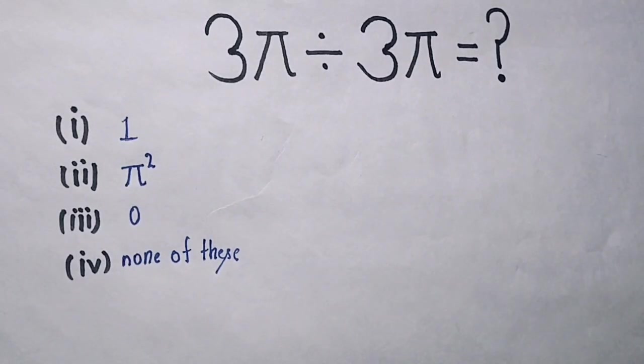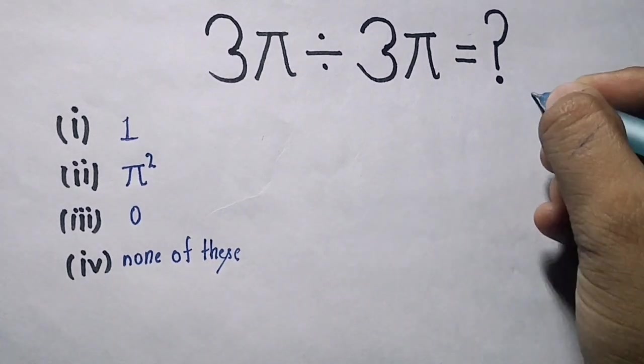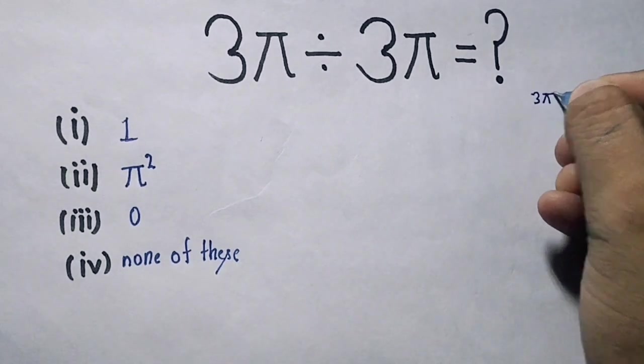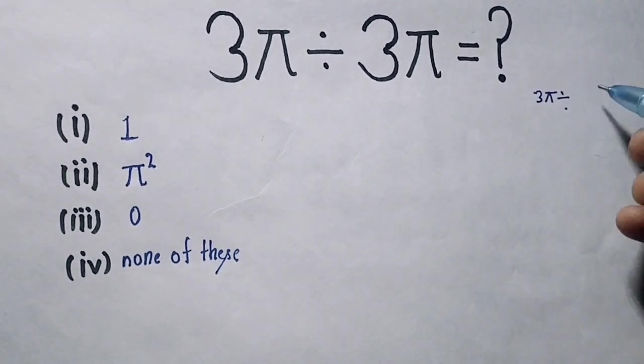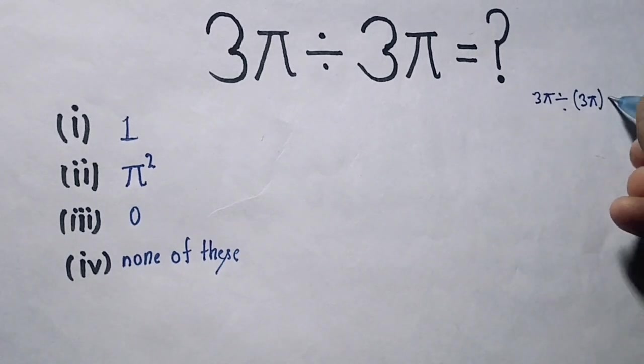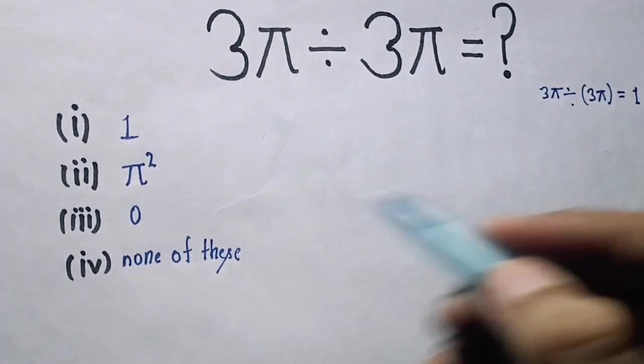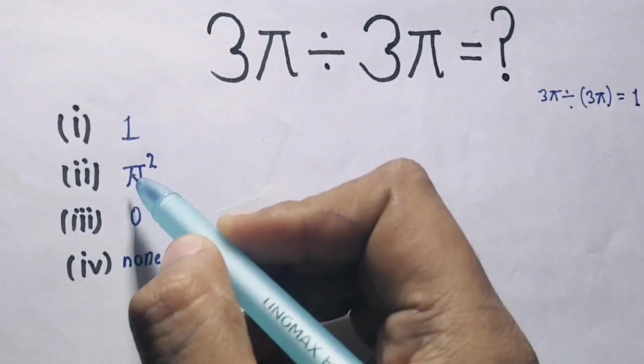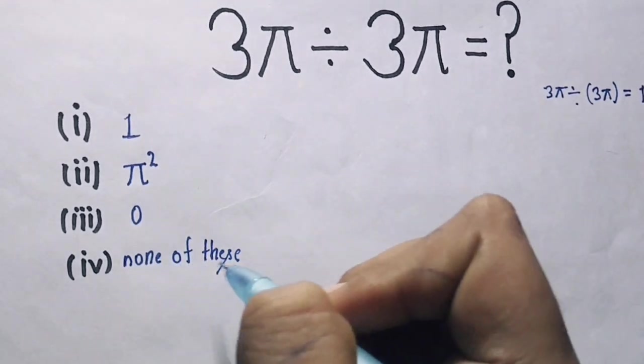Hello students, today in this video we are going to solve 3π ÷ 3π equals what. Many students say 3π divided by 3π equals 1, but this is a wrong answer. If you have 3π divided by (3π) in brackets, this will be answer 1.